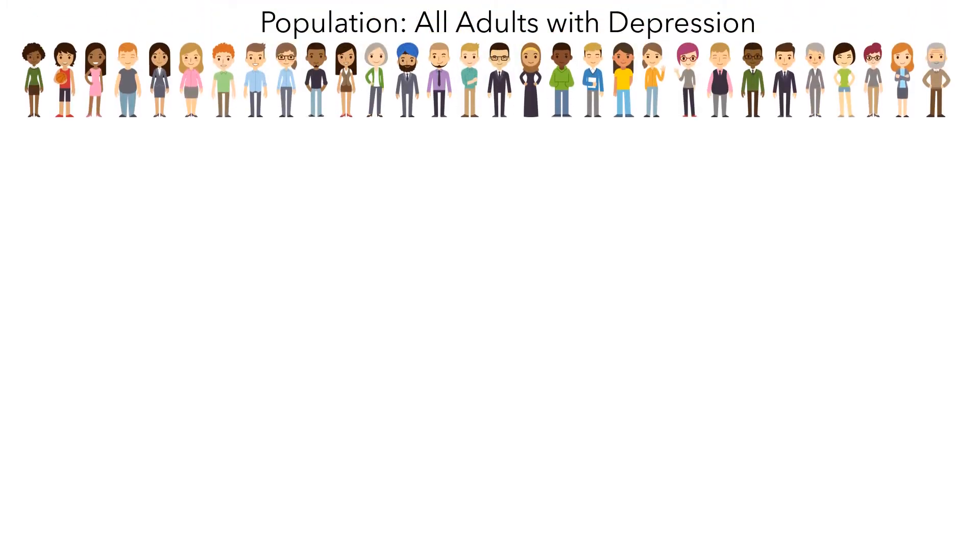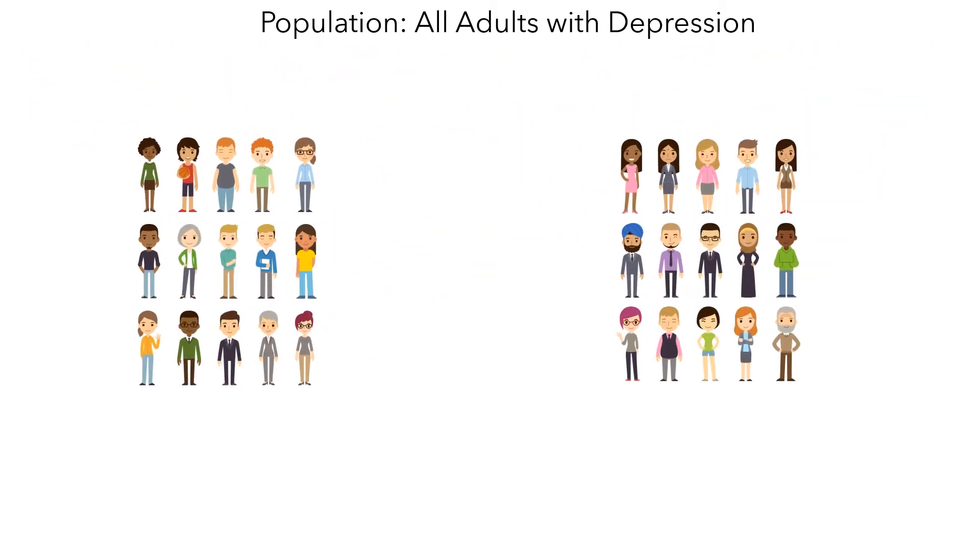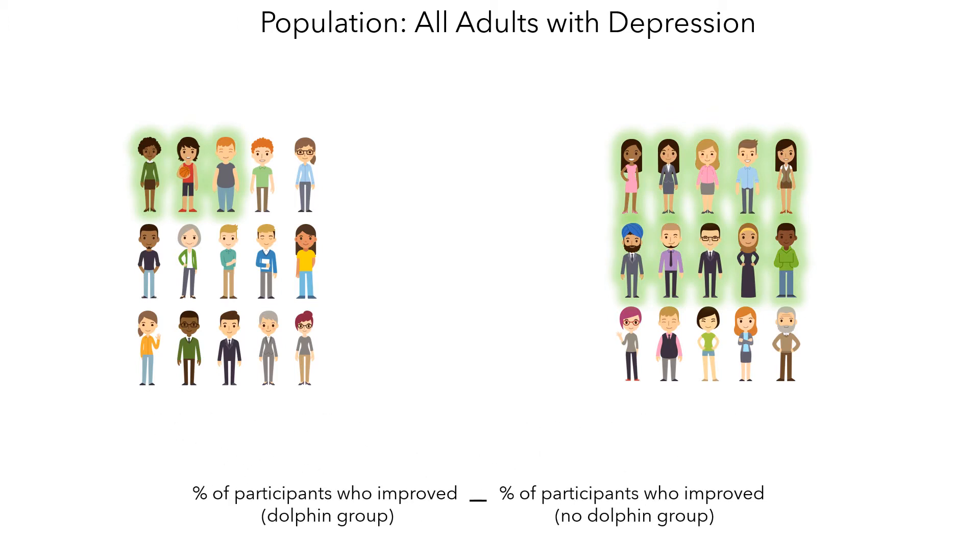Instead of two populations, there is just a single population, all adults with depression, although it is split into two groups. In each group, we're interested in the percent of participants who showed improvement. And we'll combine these into a compound parameter by subtracting. And since this is a lot to write, we'll represent this parameter using symbols.